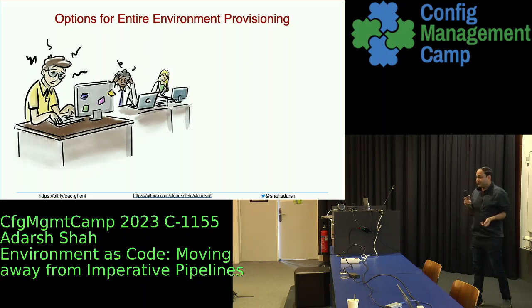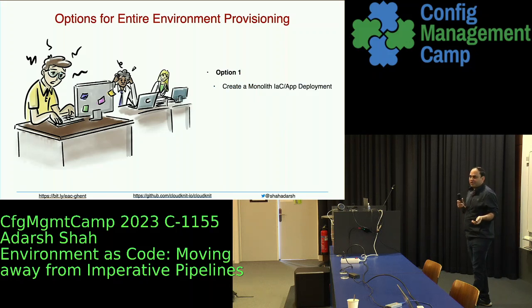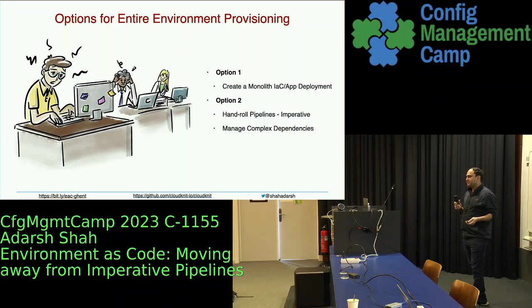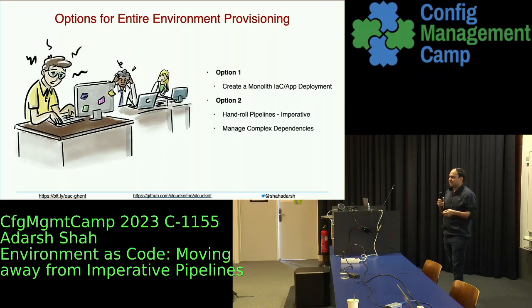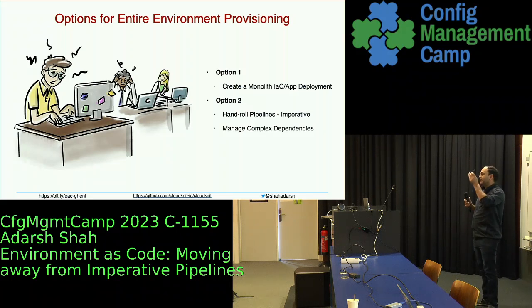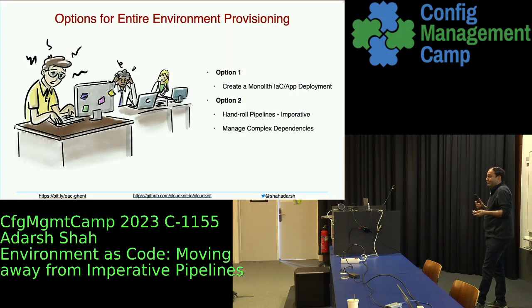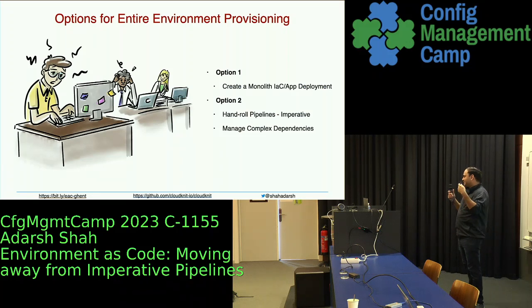So what are your options today? One option is a monolith deployment that you either run locally or from a pipeline. Or you can break it into multiple pieces — networking, EKS, and various components in Terraform — and then have your applications deployed in Helm. But then you need to write pipelines, and these pipelines start getting complex because I want to make sure networking gets provisioned first, then EKS, then the apps. I need to manage all that order in my pipeline, and the pipeline code is imperative — you have to write all the logic of what runs first and next.